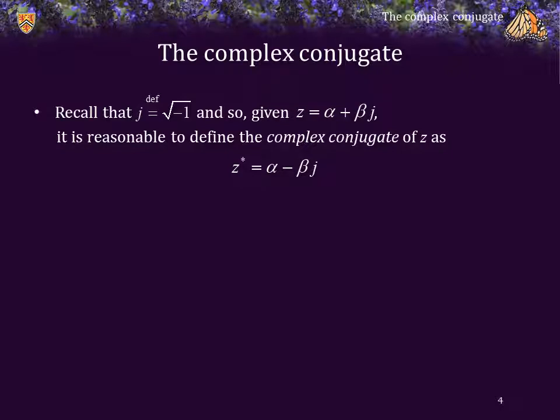Now recall that j, by definition, is a square root — specifically the square root of negative 1. So given z is equal to alpha plus beta j, it is therefore reasonable to define the complex conjugate of z as z star is equal to alpha minus beta j.